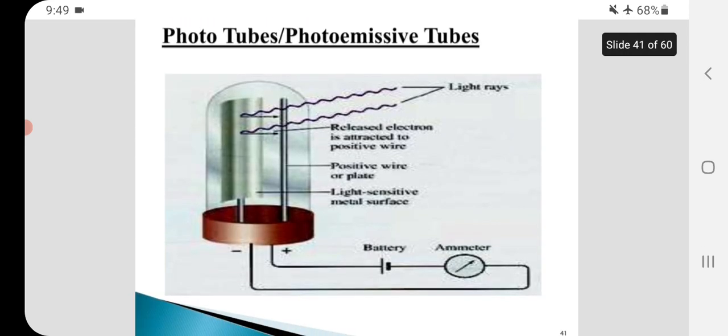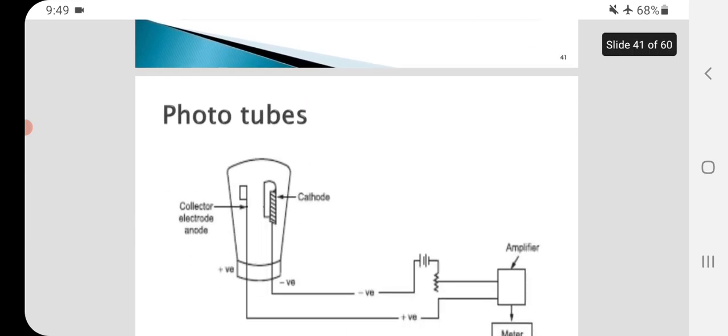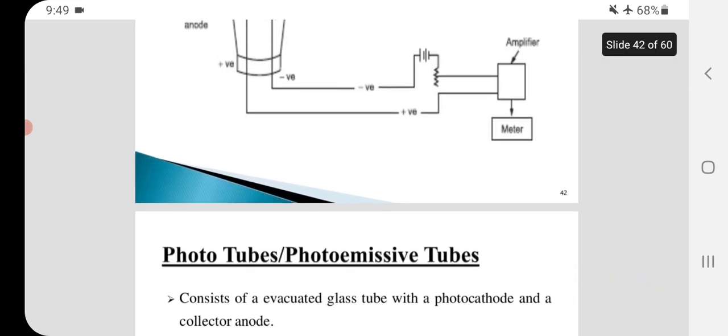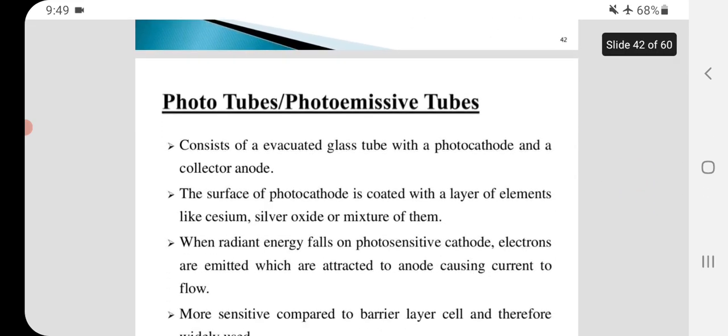Phototubes or photoemissive tubes: These are the structure of phototubes. Phototubes consist of evacuated glass tube with photocathode and a collector anode.